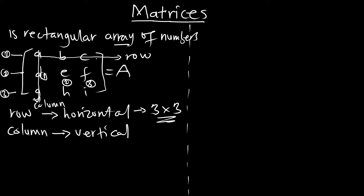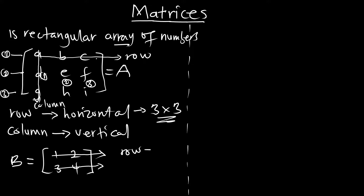For example, if we have another matrix B in the form: one, two, three, four — this is also a matrix. Let's count the number of rows and columns. We have row one and row two, so two rows. And column one and column two, so two columns. This is a two-by-two matrix, while matrix A is a three-by-three matrix.